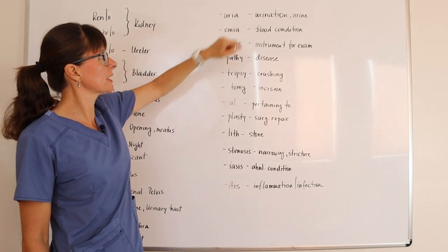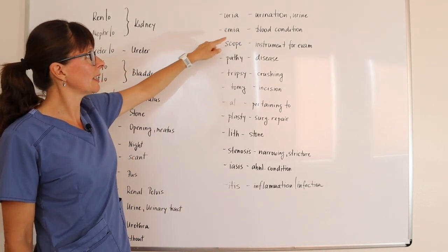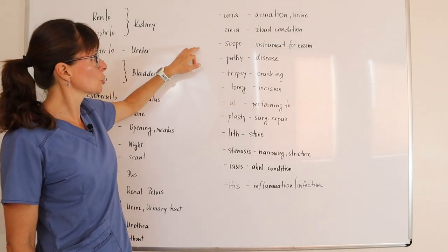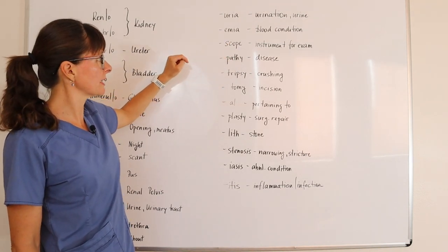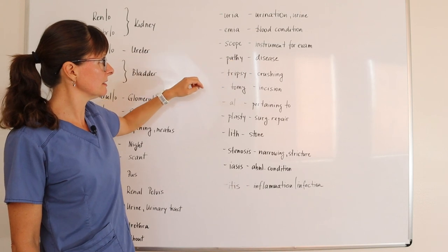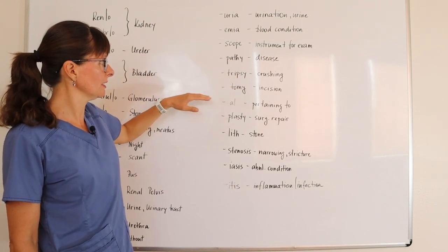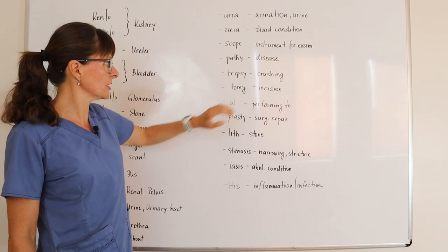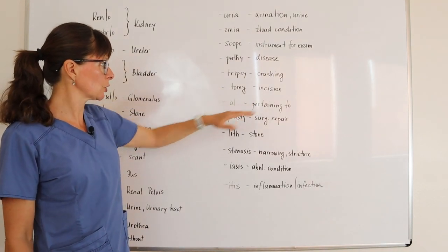we have -uria meaning urination or urine, -emia meaning a blood condition, -scope instrument for examination, -pathy disease, -tripsy is crushing, -tomy or -otomy incision, -al pertaining to.